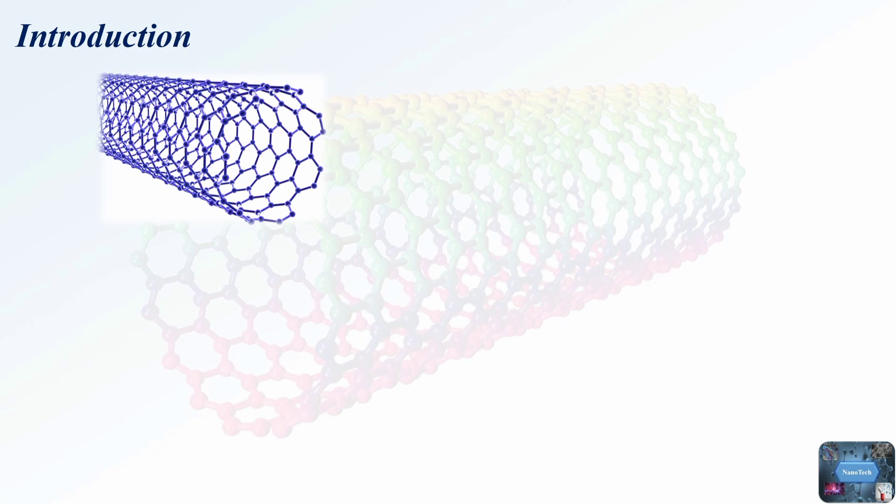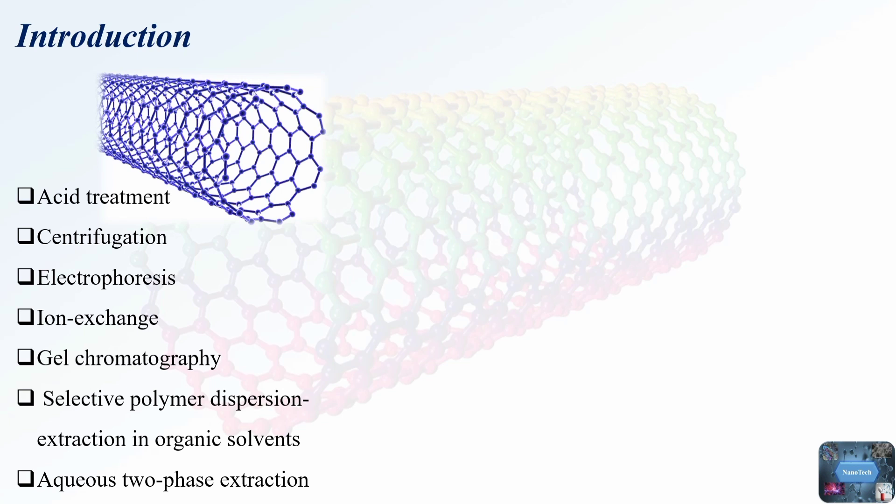Numerous techniques and separation strategies have been developed to categorize heterogeneous mixtures of (n,m) single wall carbon nanotubes and impurities. The most prevalent methods for eliminating bulk impurities from single wall carbon nanotube samples encompass acid treatment for initial single wall carbon nanotube purification and centrifugation for dispersed CNT populations.